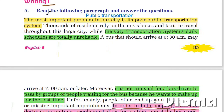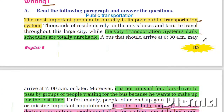Writing 1. Read the following paragraph and answer the questions. A paragraph has a main idea or topic sentence, followed by supporting details, and finally a conclusion. The first yellow-highlighted sentence is your topic sentence or main idea. The two green sentences are the supporting details which support the first sentence. The last pink-highlighted sentence is the conclusion.